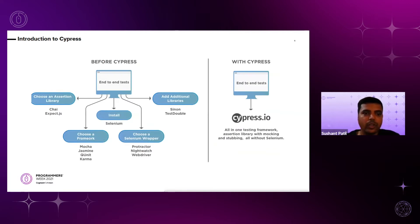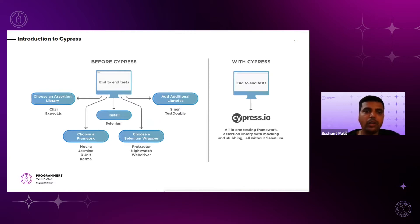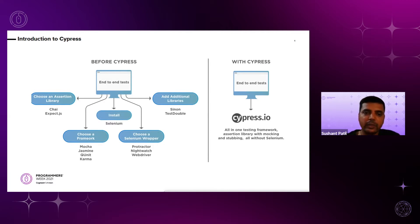Before Cypress, to design end-to-end test cases, you needed to choose multiple separate components. You had to choose an assertion library like Chai, Sinon, Chai-jQuery, or Expect.js, and a unit test framework to sequence and run test cases such as Mocha, Jasmine, QUnit, or Karma — all specified explicitly in the package.json file. Additionally, you needed Selenium wrappers like WebDriver, Protractor, or Nightwatch, and third-party reporting libraries.